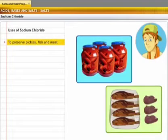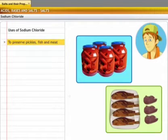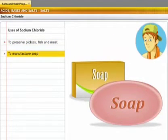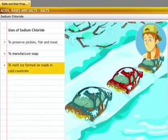It is also used as preservative in pickles, fish and meat. Sodium chloride is used in the manufacture of soaps. It is used to melt ice that forms on the roads in cold countries.